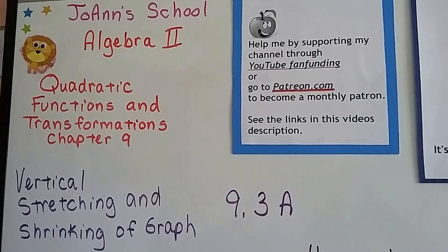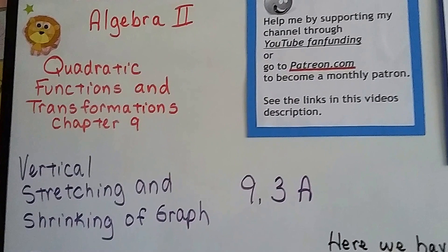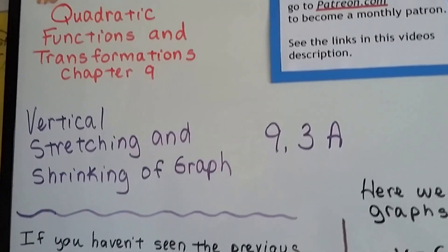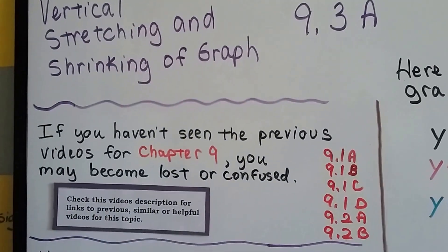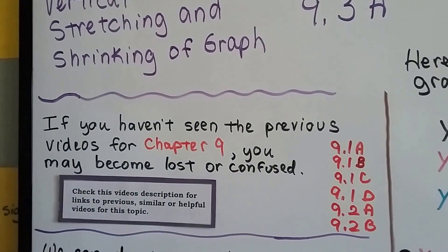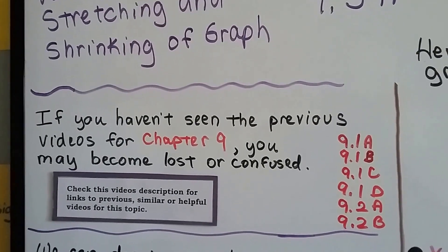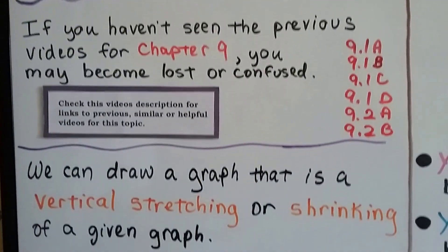Algebra 2, we're at 9.3a: vertical stretching and shrinking of a graph. If you haven't seen the previous videos, we're up to 6 now. If you become lost or confused, you can click on the description to find out where you got lost.